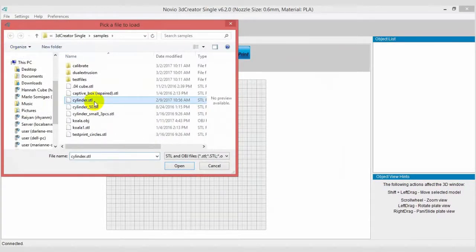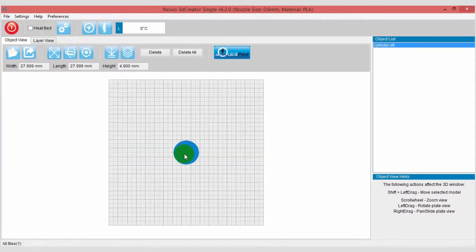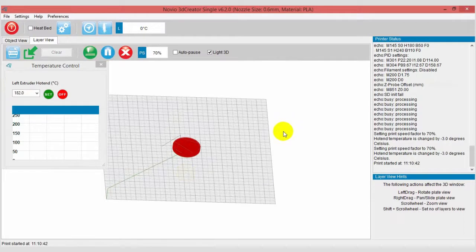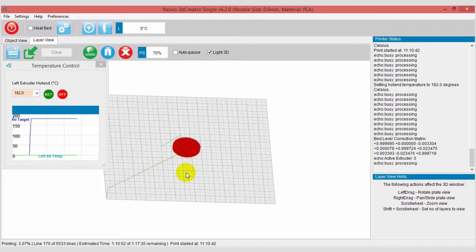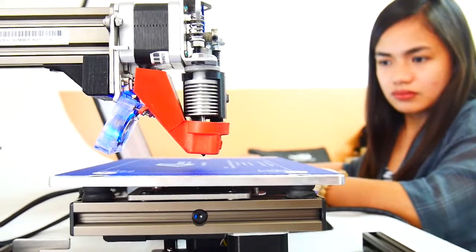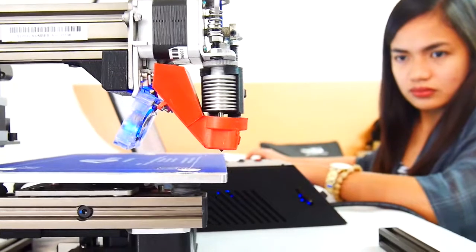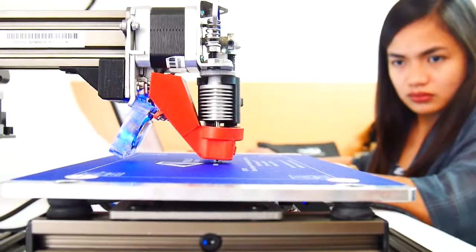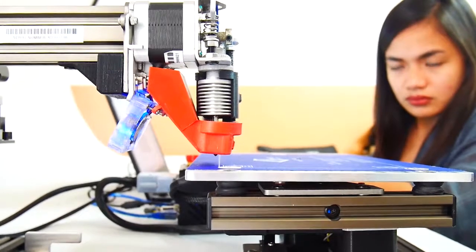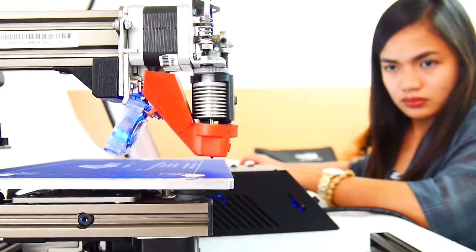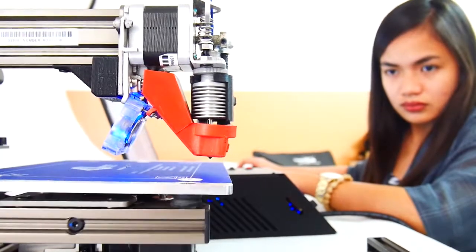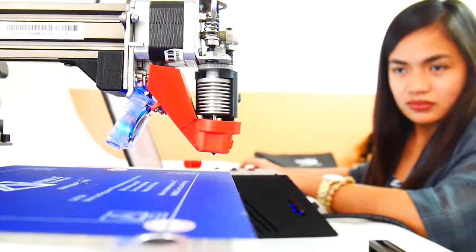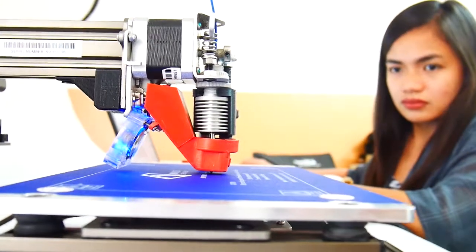Then load OBJ or STL file on the 3D Creator software. When print button is clicked, the reference distance set at the center of the print plate will be measured on the mapping points. Then printing will now start.